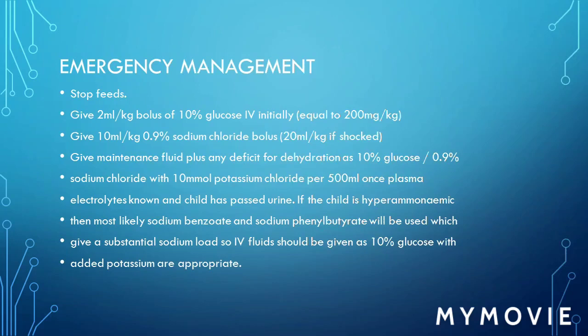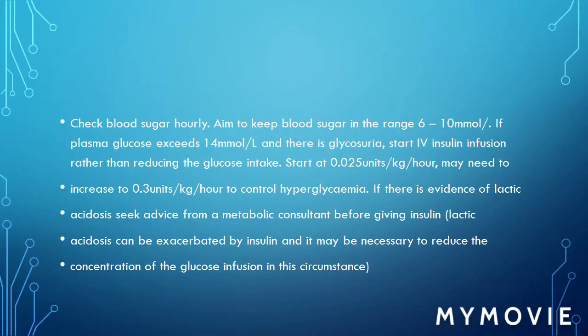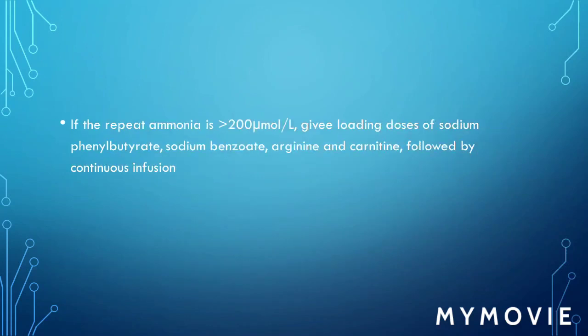After that, give 10 ml/kg of 0.9% sodium chloride. If the child is shocked, give 20 ml/kg. Give maintenance fluids plus any deficit, and the fluid of choice should be 10% glucose with 0.9% saline. If the child is hyperammonemic, you will likely start sodium benzoate and sodium phenylbutyrate, which will give a sodium load, so every fluid should be given as 10% glucose.